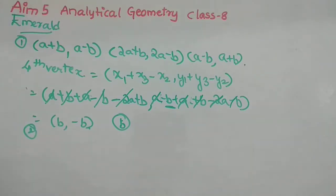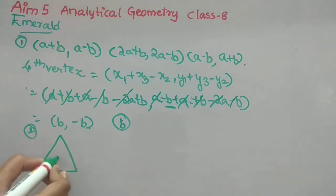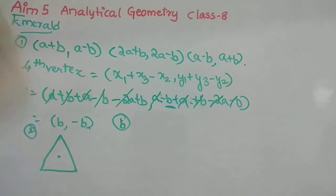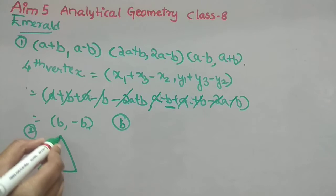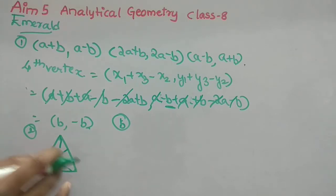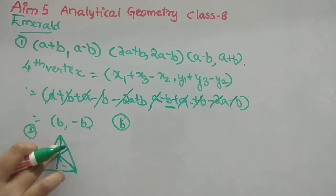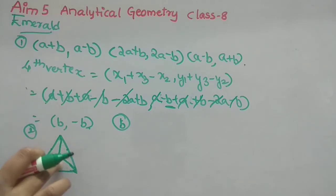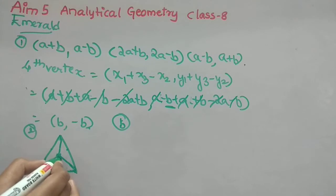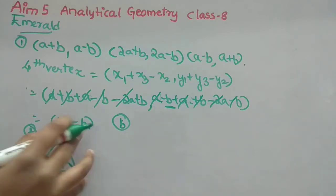Second Emerald question: the centroid of triangle ABC is given, along with two vertices. We need to find the area. Drawing the triangle with centroid G, which is formed by the intersection of all three medians. The vertices are A(4,−3), B(−9,7), and C is unknown. The centroid is (1,4).